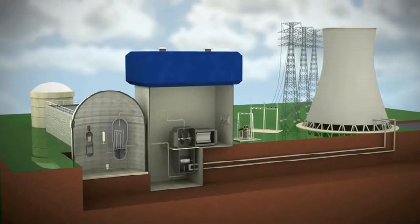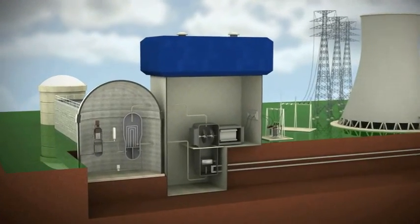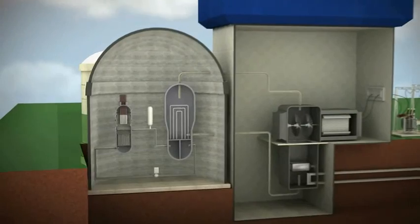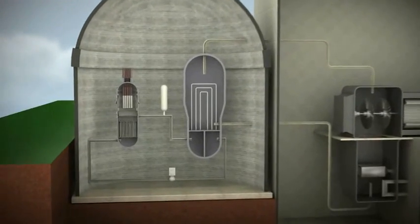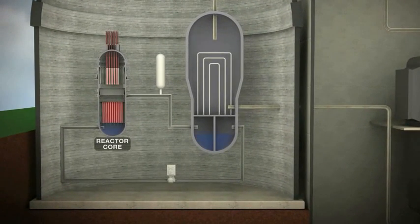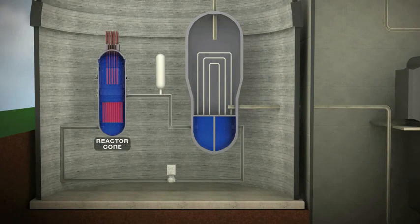The process of creating electricity using nuclear power begins with the splitting of uranium atoms in the reactor. This process, called fission, produces heat.